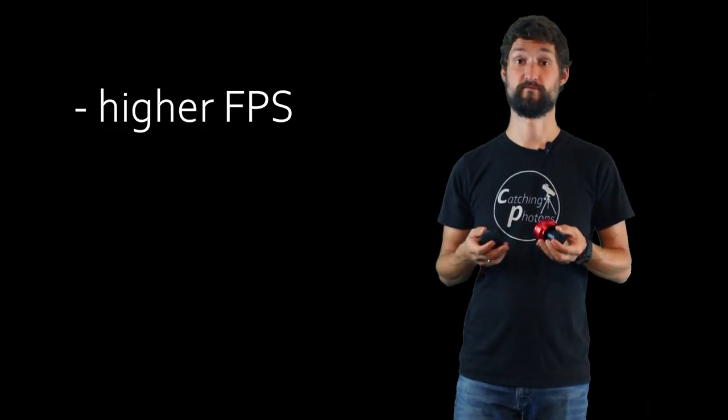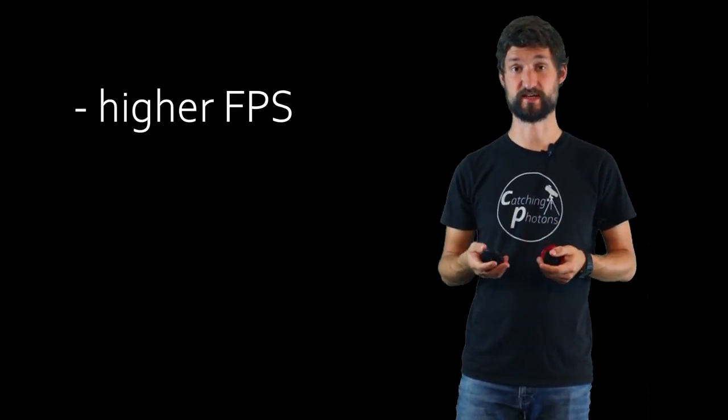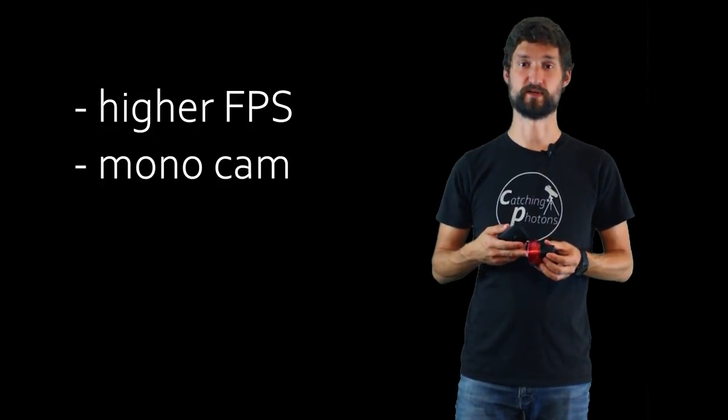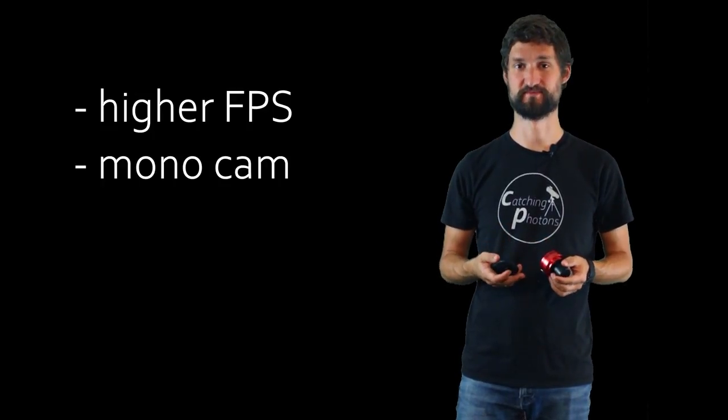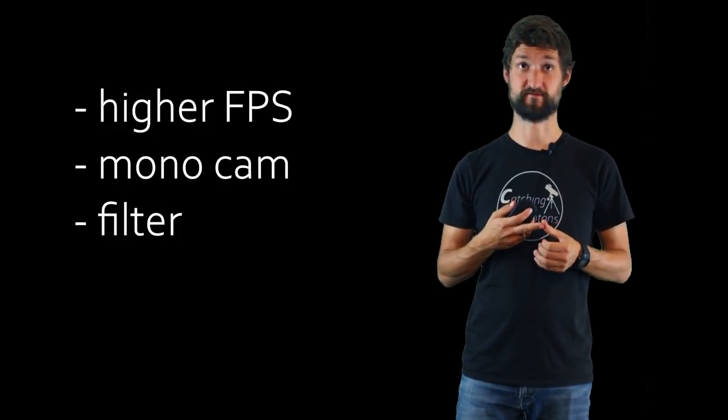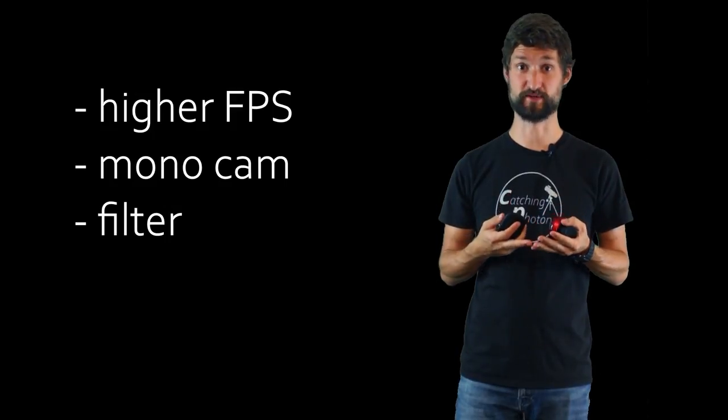What is beyond the ZWO ASI 120 MCS color camera? First, there are cameras with a much higher frame rate, so you can capture more images in a shorter timeframe and choose the best of them. Besides that, there is also the world of mono cameras you can dip your toes into. But remember, an expensive mono camera needs an expensive filter wheel, needs expensive filters. It's a rabbit hole.